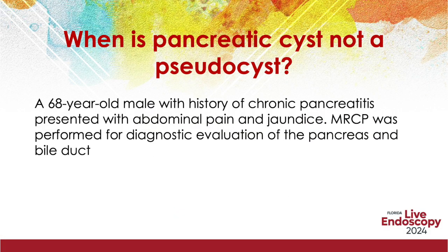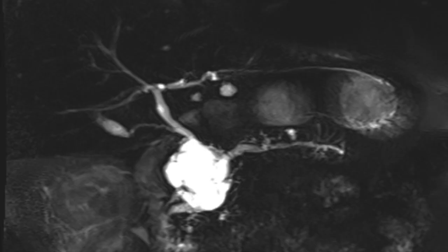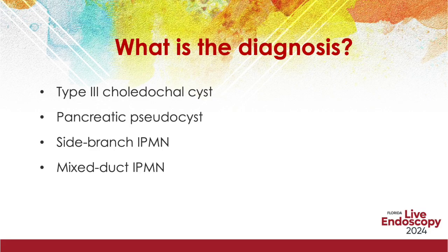A 68-year-old male with history of chronic pancreatitis presented with abdominal pain and jaundice. An MRCP was performed for diagnostic evaluation of the pancreas and the bile duct. What is the diagnosis?